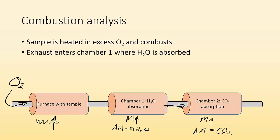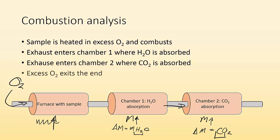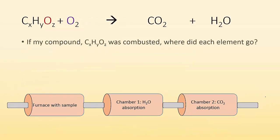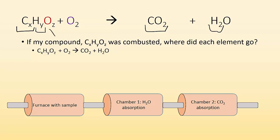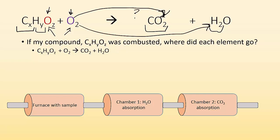From that, if I know how much water was made, I can figure out how much hydrogen there was. If I know how much carbon dioxide was made, I can figure out how much carbon there was. And then the excess oxygen leaves. But the oxygen could have came from one of two places — it could have came from our compound or it could have came from the excess oxygen we were reacting with it. So how do we figure out which one?